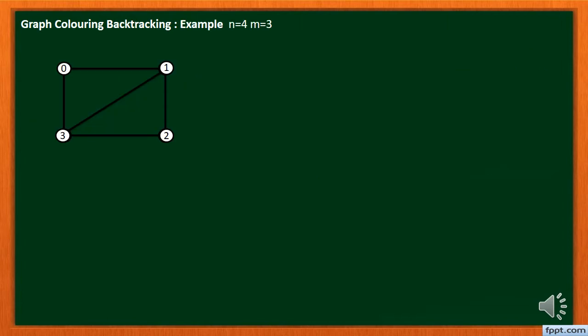Let's start with an example. In this example there are four vertices and we have to use three colors to solve this problem: red, green and blue. For solving this example we have to prepare adjacency matrix G.